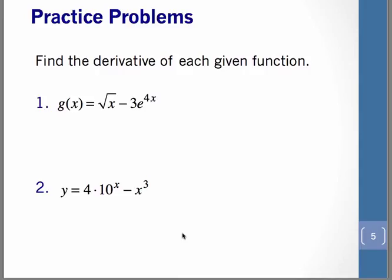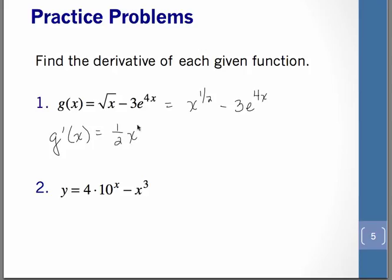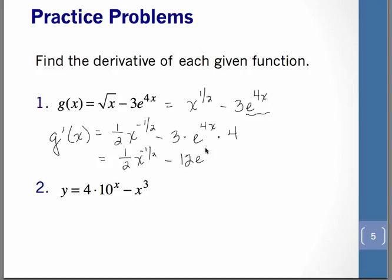So with the first one, of course, we're going to rewrite that square root function as x to the 1 half. So our derivative of the square root function — you've already learned to do that with the power rule. Now with the other one, remember the 3 stays put for now. Now we have to do the derivative of e to the 4x. So that's going to be e to the 4x, but then we have to multiply by the derivative of the exponent, which is just 4. So in the end, our answer is 1 half x to the negative 1 half minus 12e to the 4x.